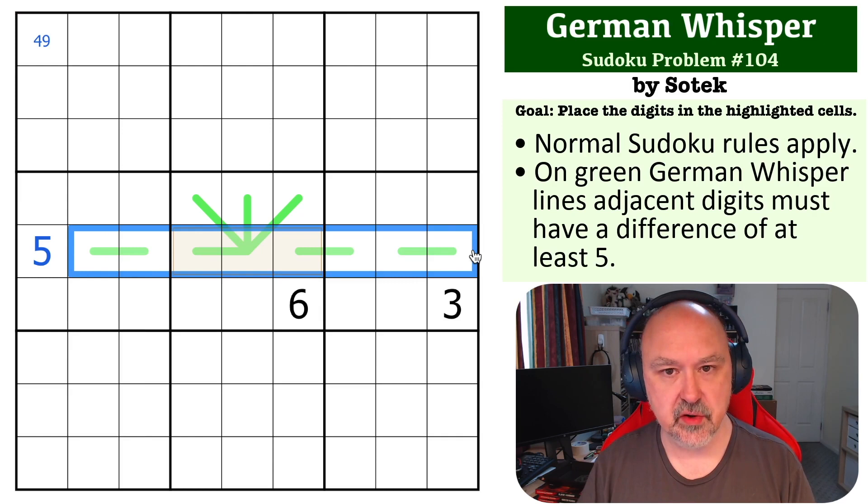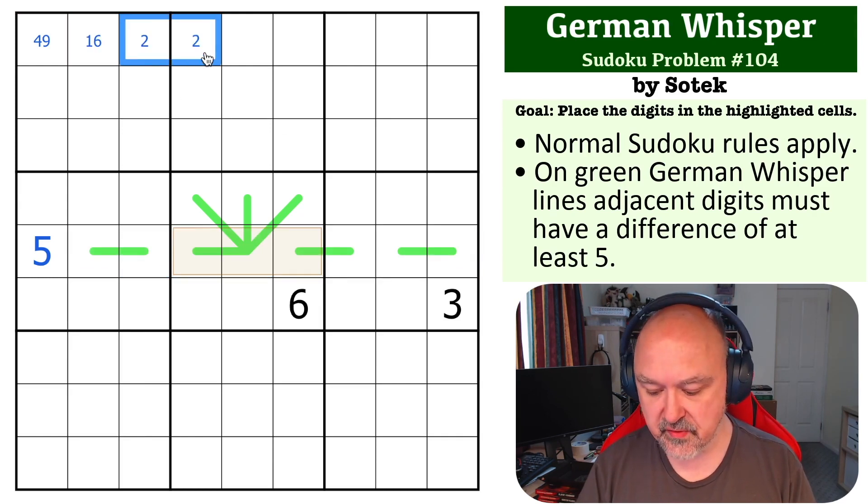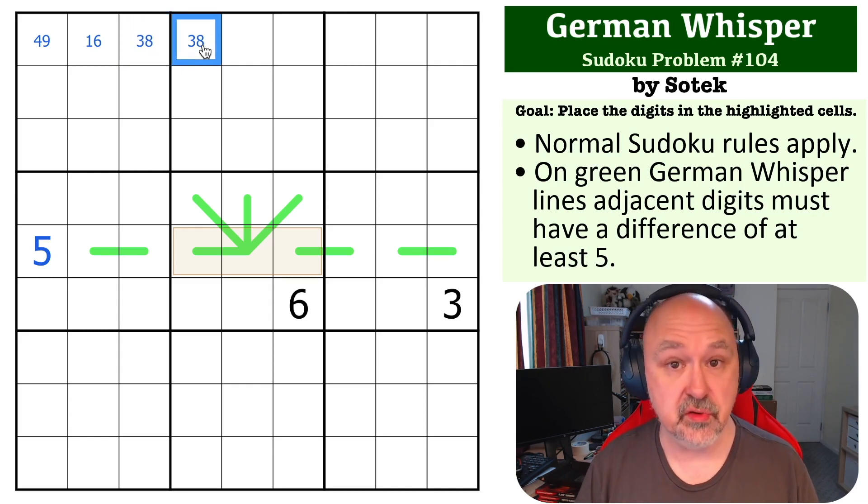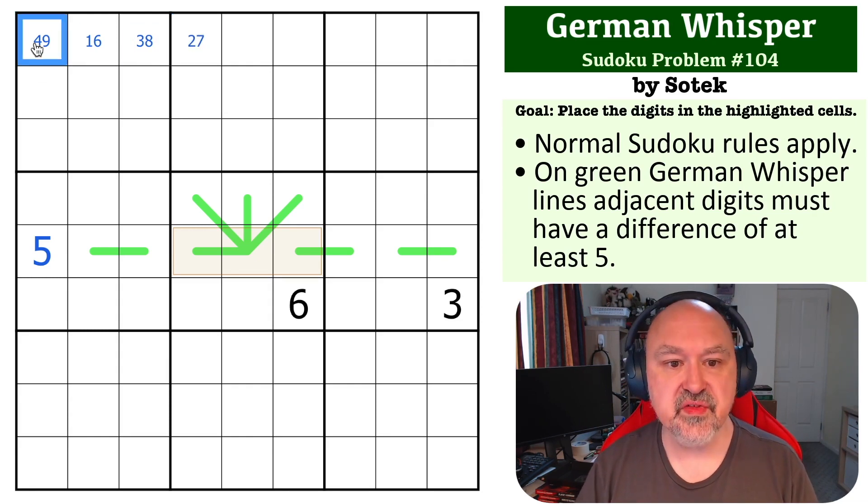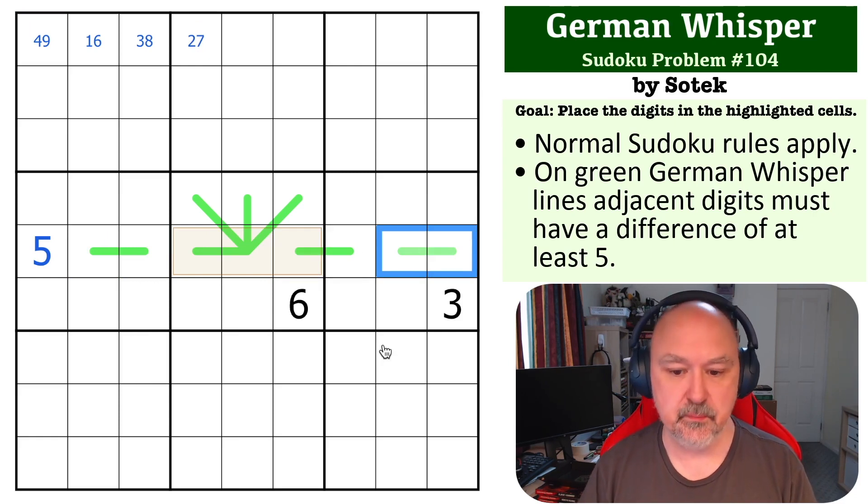And we know wherever six goes in this row it's going to claim the one. So this leaves us with two, three, and seven, eight that have not been claimed in this row. But the three can never go with the seven. So the three is going to go with the eight and the two is going to go with the seven. Three can't go with seven because they're too close to each other. So these are the pairs that are going to exist on this line and that's really important.